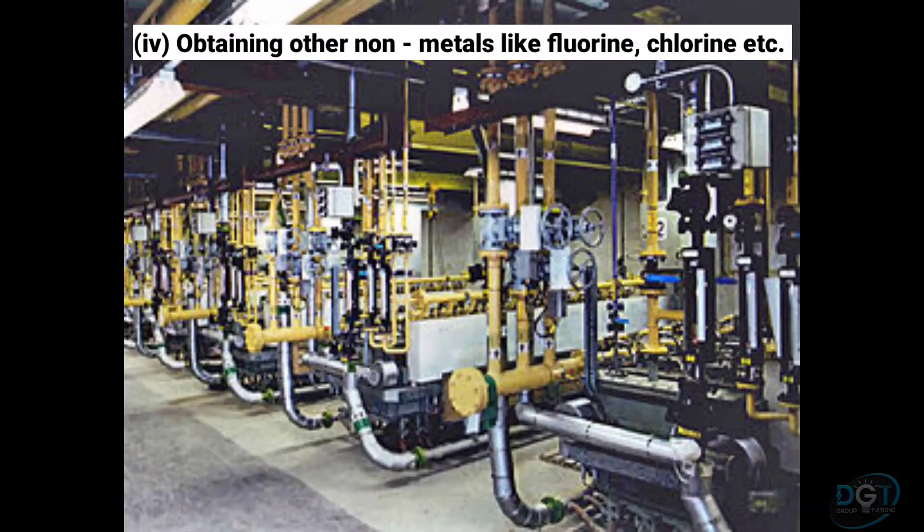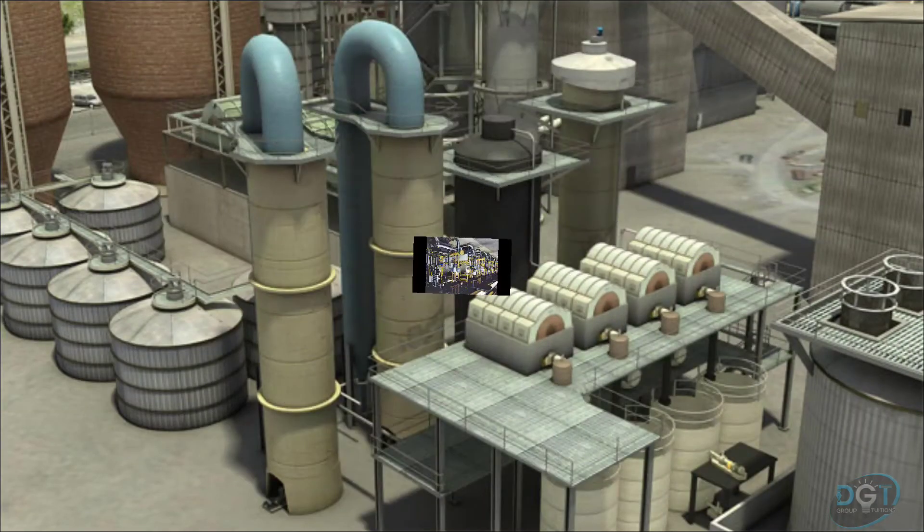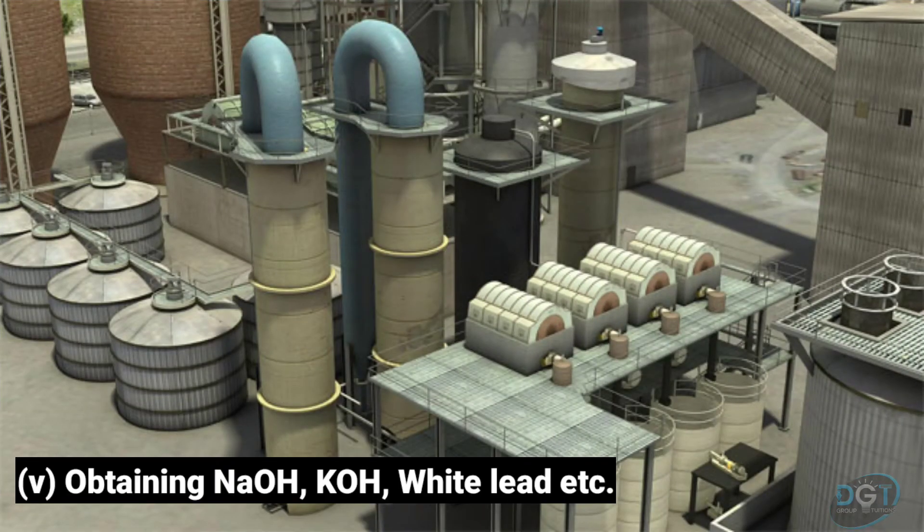Number four, non-metals like hydrogen, fluorine, chlorine are obtained by electrolysis. Number five, compounds like NaOH, KOH, white lead, etc. are synthesized by electrosynthesis method.